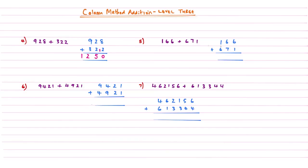Example number 5: 6 add 1 gives me 7, nothing to carry on that one. Then 6 add 7 gives me an answer of 13, so we write the 1 and then the 3. Then the last column: 1 add 6 is 7, add this 1, and that gives me an answer of 8.